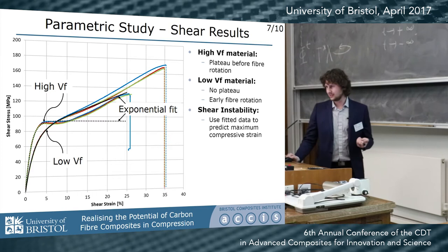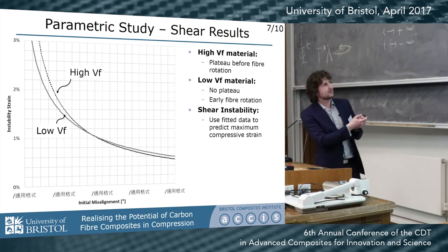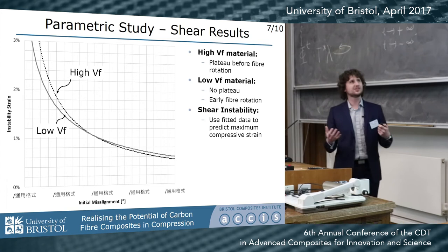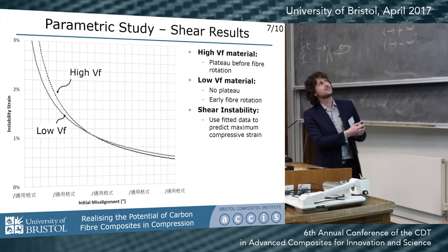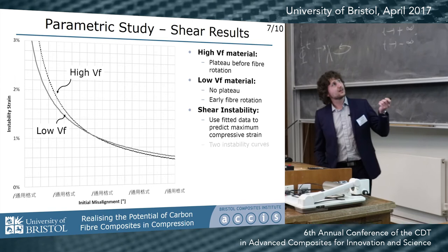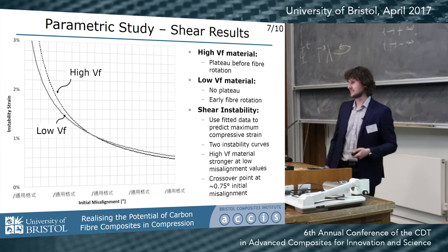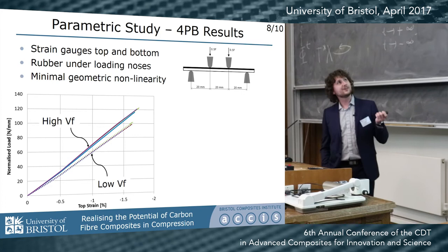When I draw the curves, this is what I get. On the x-axis is fiber misalignment, which is a function of the quality of the composite, and on the y-axis is the instability strain — the strain at which the composite will fail in compression. The high-volume-fraction material is quite a bit better at low misalignments. There is a crossover point where the low-volume-fraction material is actually stronger at high misalignments.